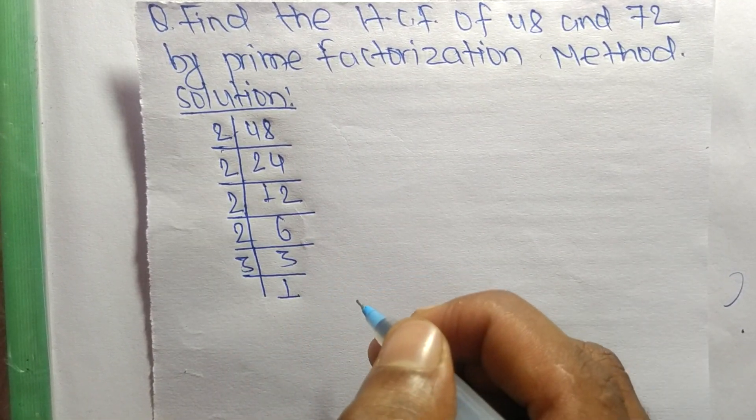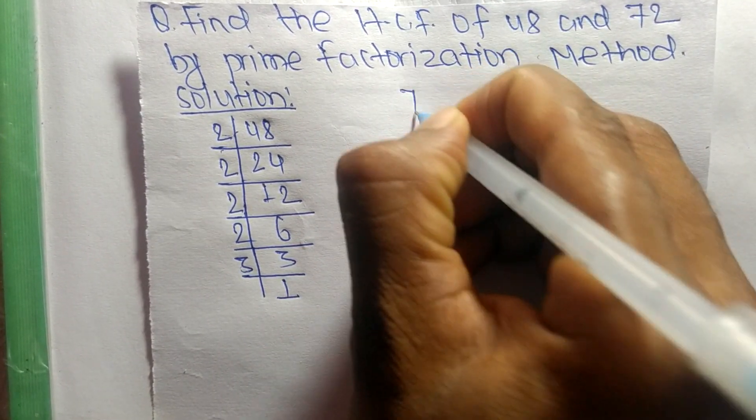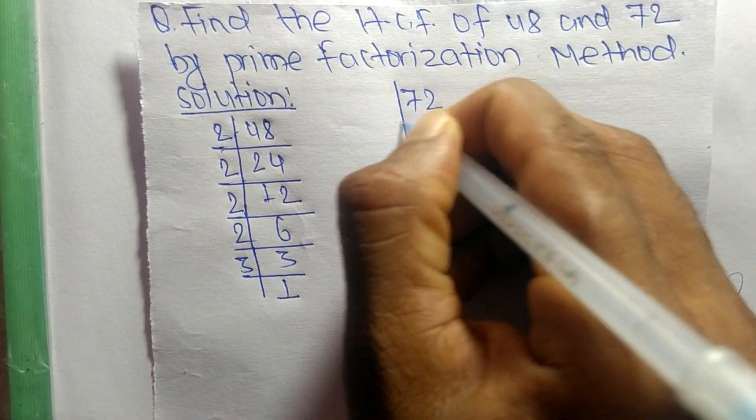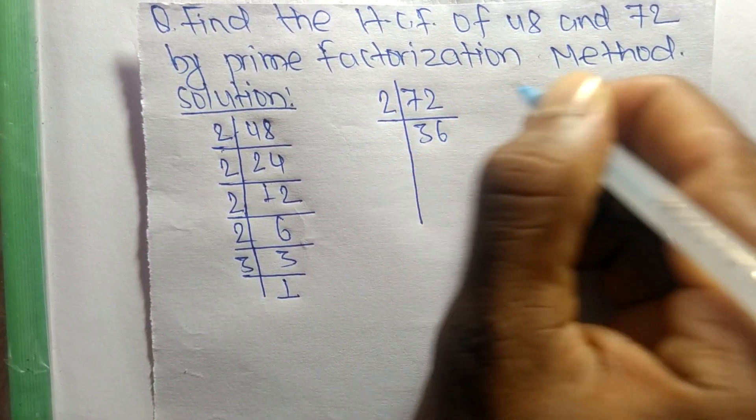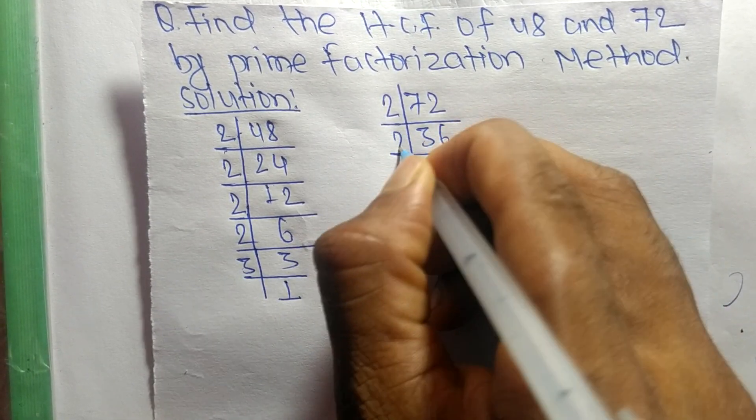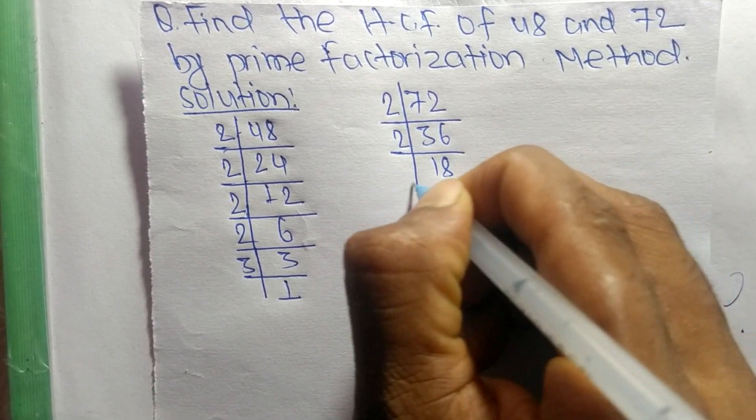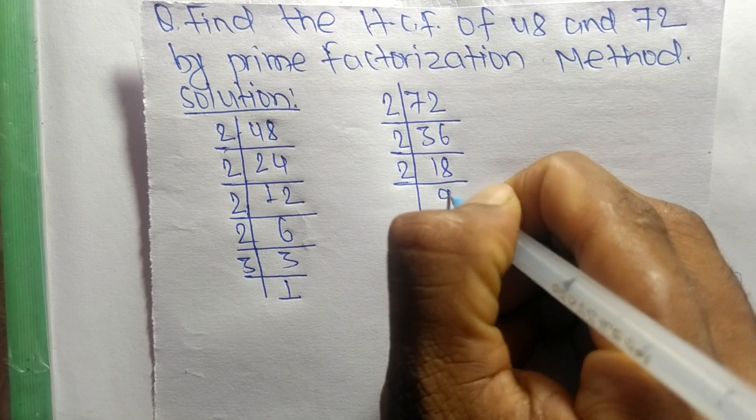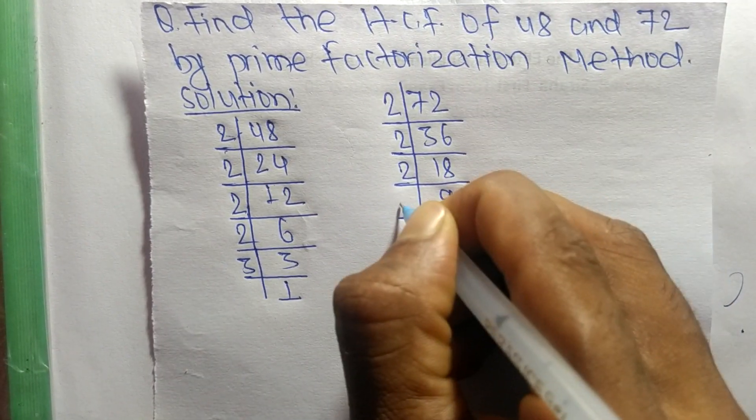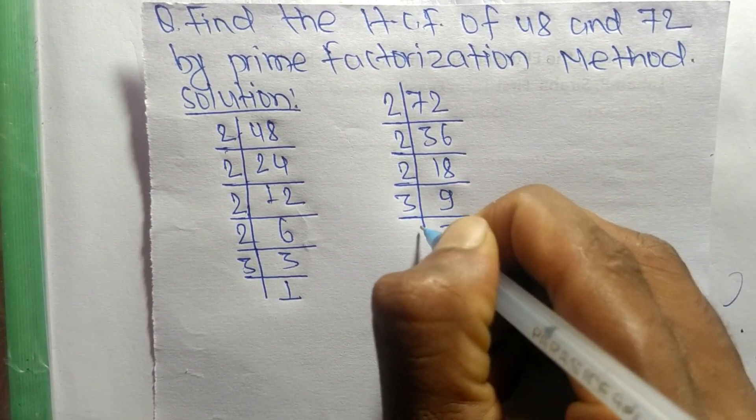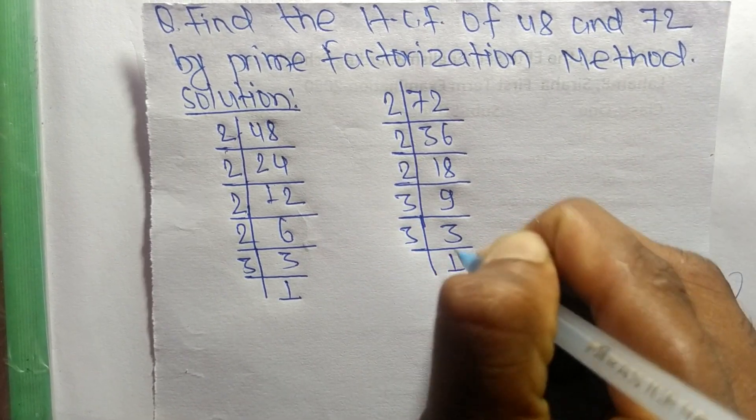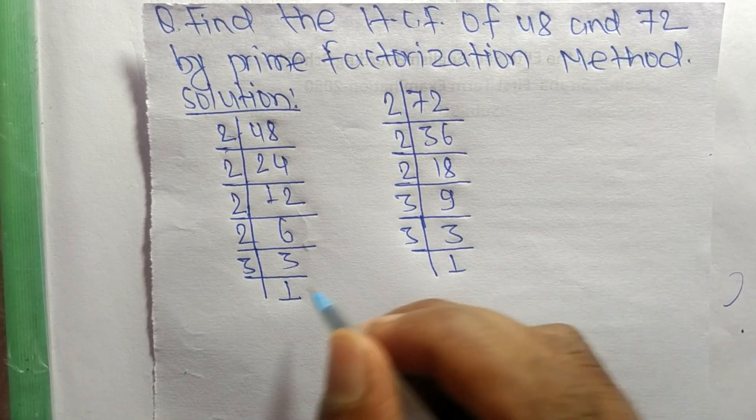Like as the prime factors of 72 are: it is 2 times 36 equals 72, 2 times 18 equals 36, 2 times 9 equals 18, 3 times 3 equals 9, and 3 times 1 equals 3.